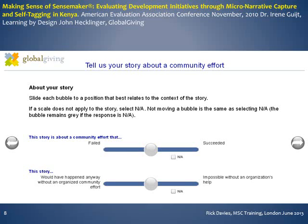The second type of self-signifier is a polarity. The storyteller has been asked to describe their story and is then asked to move a dot along a scale representing a polarity. At one end, the story is about a community effort that failed; at the other end, one that succeeded. Another scale ranges from whether the event would have happened anyway without an organized community effort, to whether it would have been impossible without an organization's help. The question is: how useful is this way of describing stories? Is it more useful than using categories, and can you think of other polarities that might be useful?